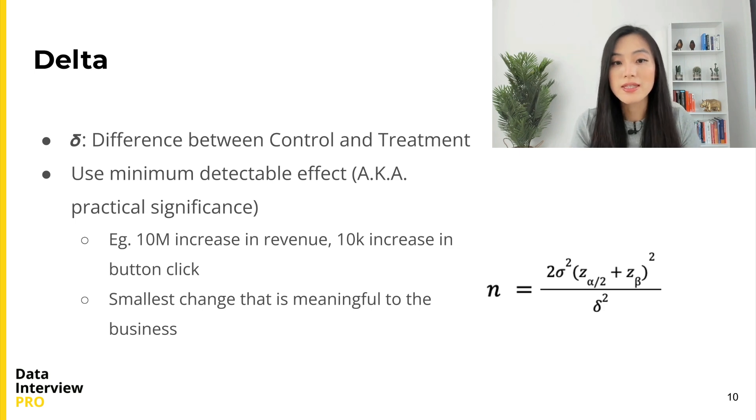The idea is to use the minimum detectable effect, also known as practical significance. That is the minimum change that makes sense for the business. For instance, 10 million increase in revenue or 10 thousand increase in button clicks.